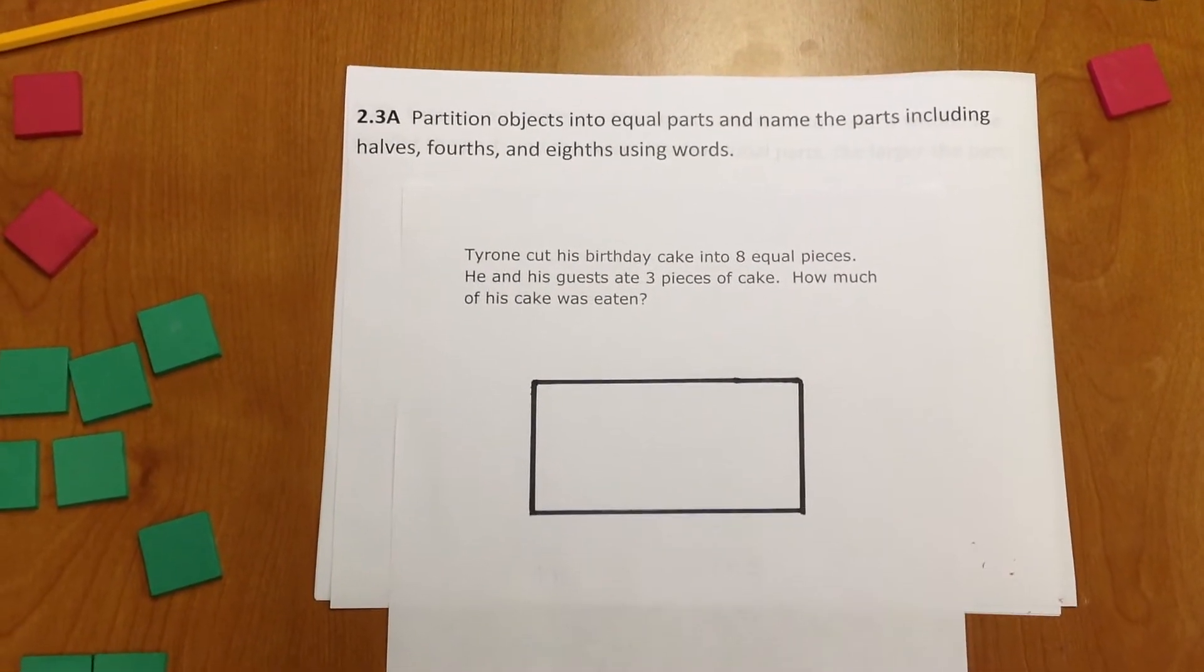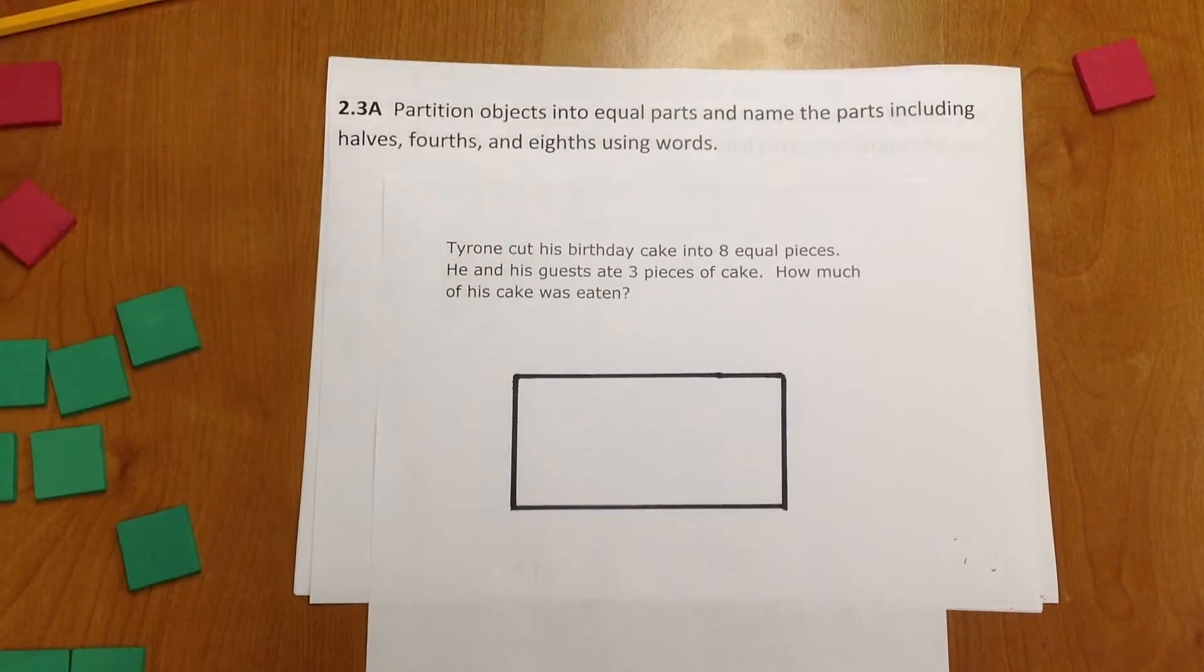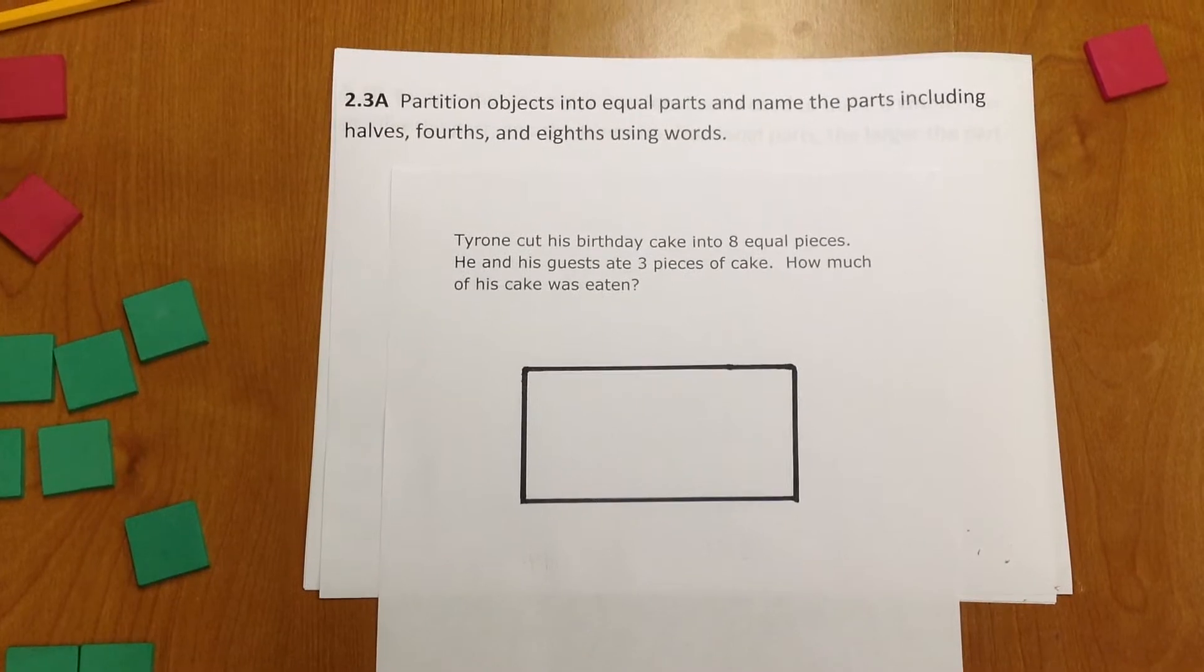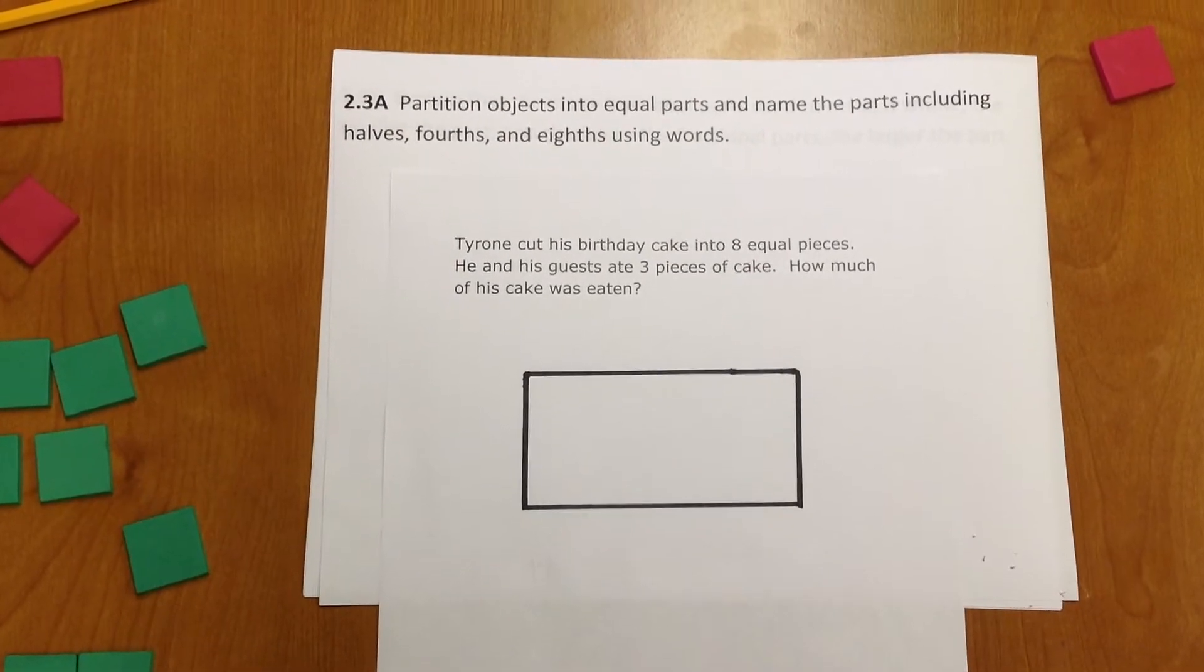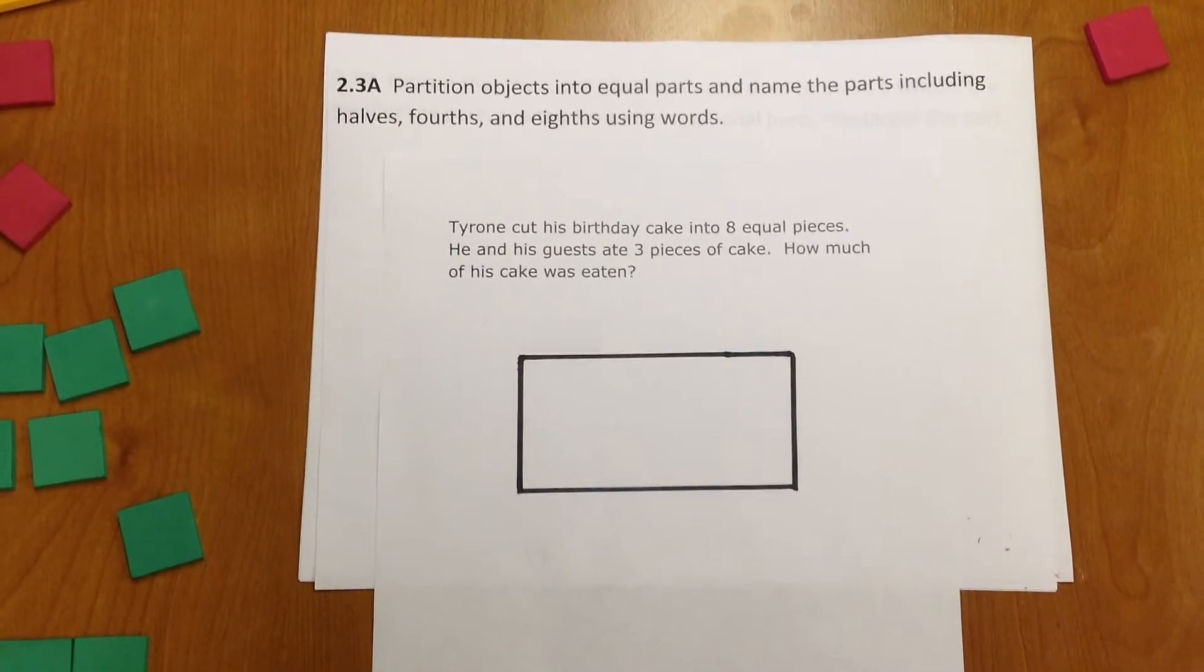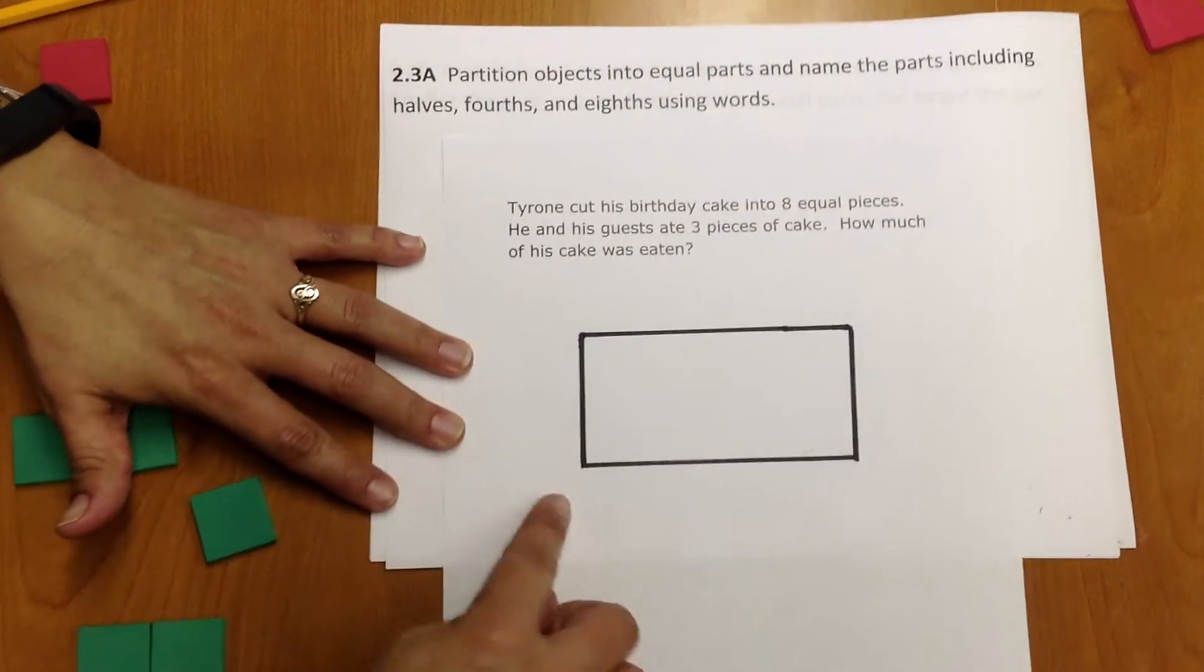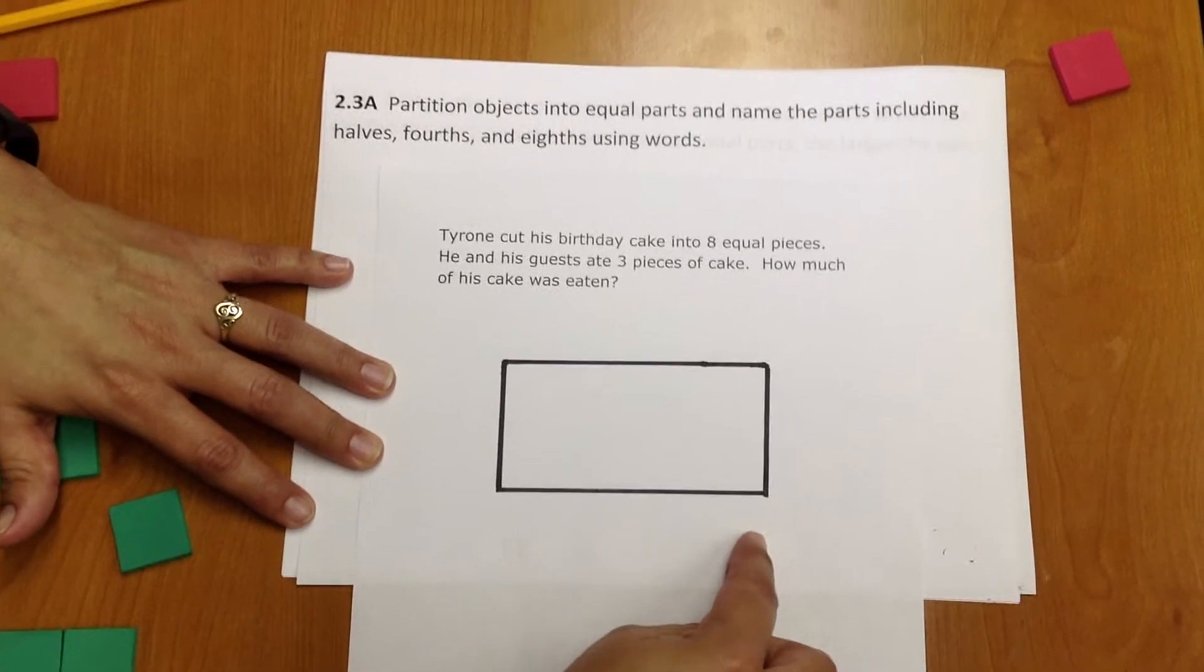I want to look at a scenario that addresses this standard. Tyrone cut his birthday cake into eight equal pieces. He and his guests ate three pieces of cake. How much of his cake was eaten? This rectangle right here represents Tyrone's birthday cake.